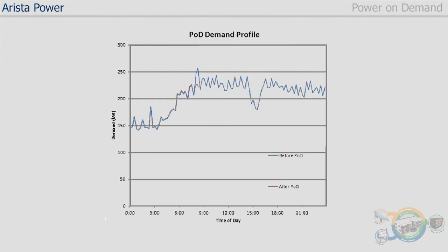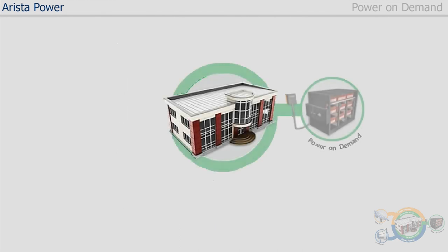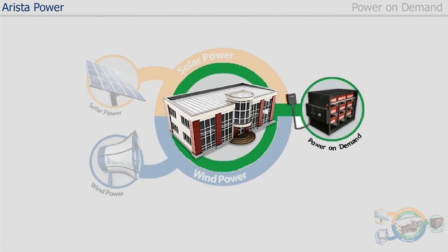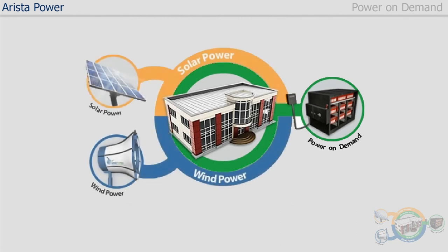Power on Demand specifically targets the demand peaks to take the biggest chunk out of your energy bill. Energy management aims to reduce consumption, whereas Power on Demand stores energy and releases it to reduce peak demand. Power on Demand works by using an energy storage bank to allow you to turn on machinery when you need it, not just when it is convenient, and can be supported by renewable energy generation.